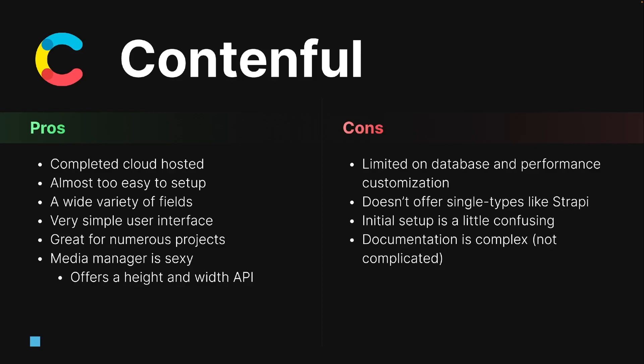The reason I went with Strapi initially was because it offers single types — types that only allow one entry. This is great for pages: each page has its own specific data types. For example, your home page might have metadata types common to all pages, but it might also have a profile picture type that other pages don't have. Basically, you can edit your website from Strapi for individual pages, which is pretty great — Contentful doesn't actually allow that.